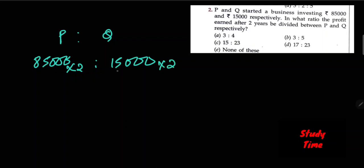For two years, multiply both by 2. The 2s cancel out, three zeros and three zeros cancel out. 85,000 and 15 also cancel, giving us 17 is to 3. Our ratio is 17:3. The answer is none of these options.